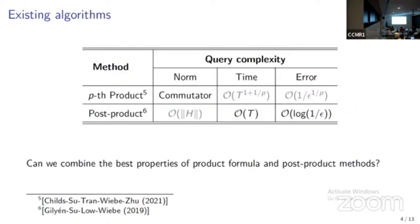A disadvantage of post-product methods is their norm dependence or system-size dependence, since many require a block encoding structure leading to spectral norm dependence on the entire Hamiltonian. For the product formula, a recent paper by Childs et al. showed commutator scaling — the scaling depends on commutators among the simple Hamiltonians H_gamma. In many practical examples with locality structure, this commutator scaling can be much smaller than the entire spectral norm, giving the product formula an important advantage in terms of system-size or qubit-count dependence.